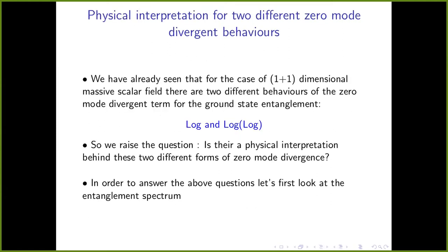On the other hand, for the periodic boundary condition, people analyzed the zero mode limit divergence and saw that it can also scale as double log—as given in equation 5—where delta is the IR cutoff. So we see that for the discretized version of one-plus-one massive scalar field, we can have both forms of the divergence in the zero mode limit: log and double log. We raised this question: is there a physical interpretation behind these two different forms of the zero mode divergence?